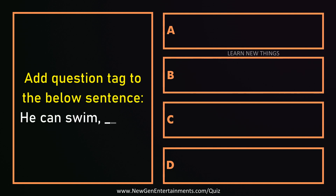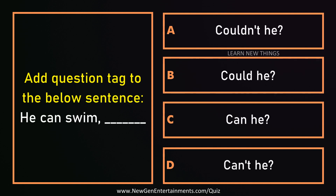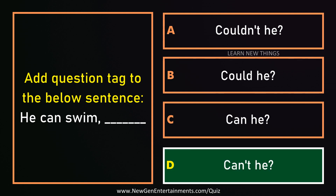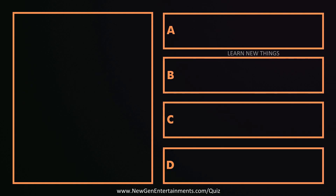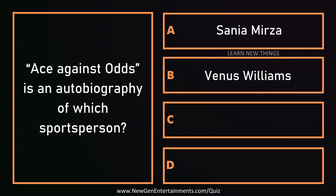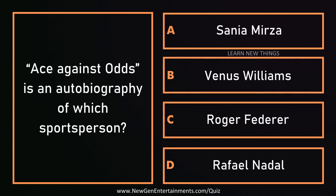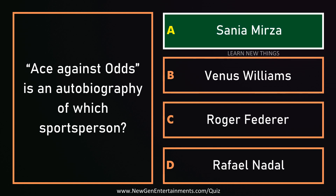Add a question tag to the sentence 'He can swim.' Can't he? Ace Against Odds is an autobiography of which sports person? Sania Mirza.